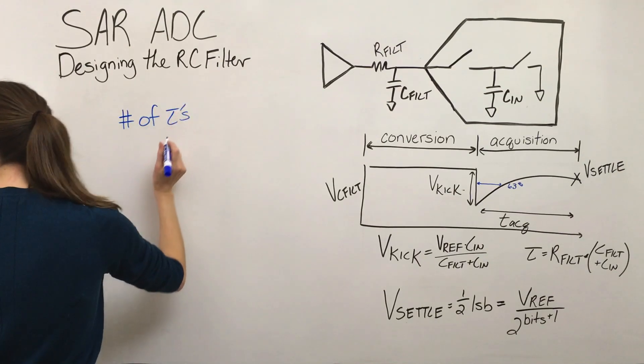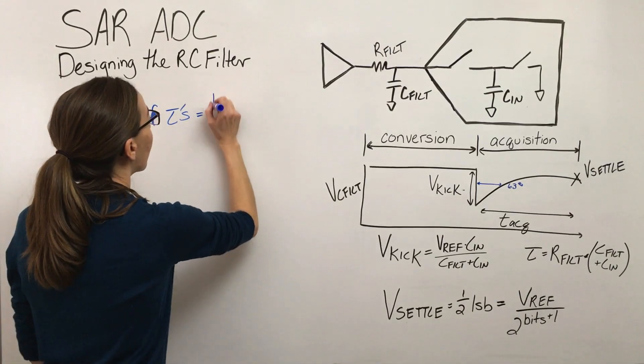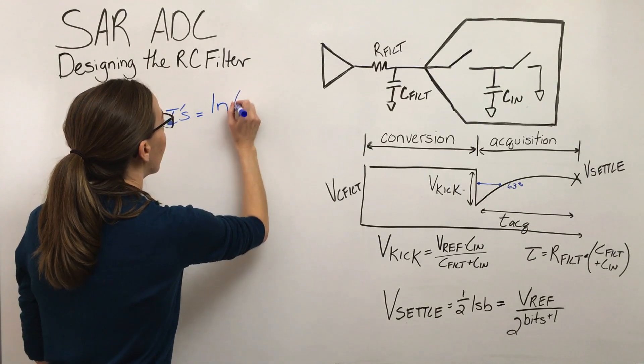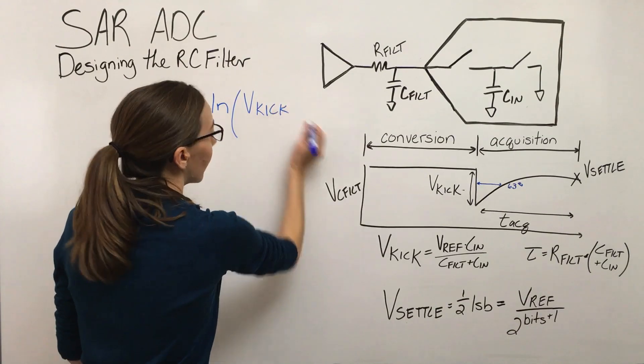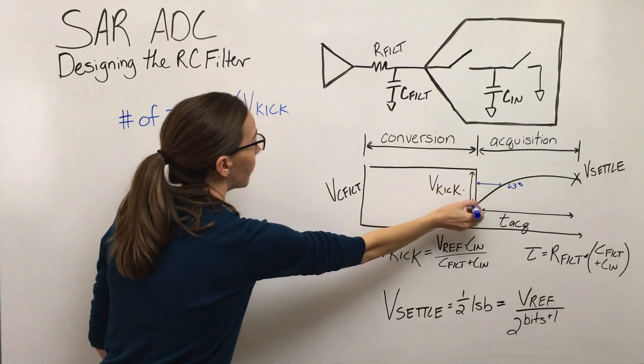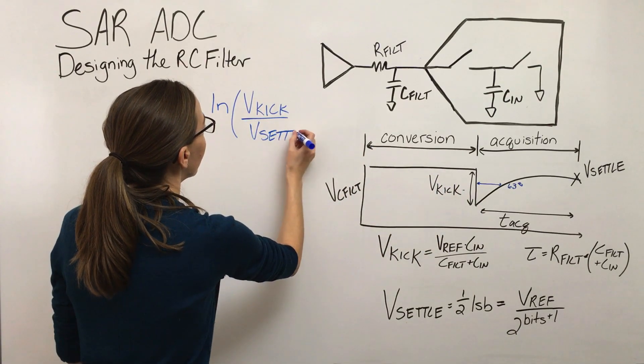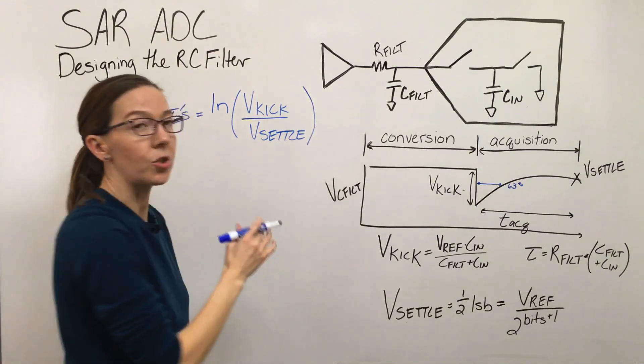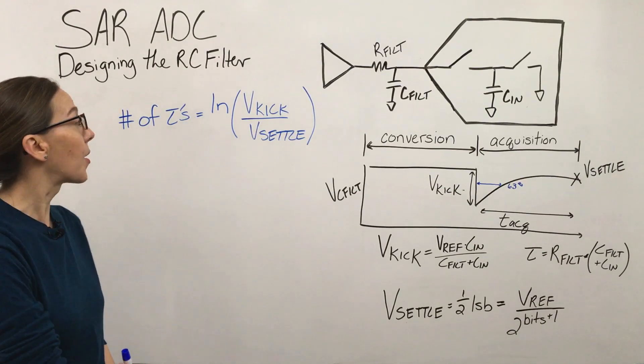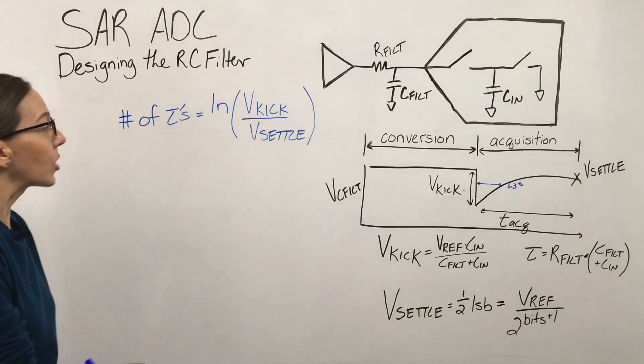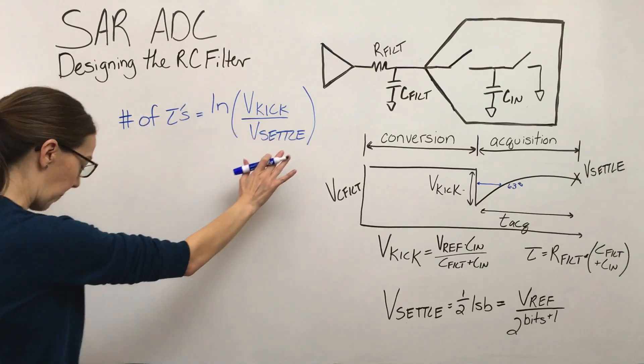But what we know about this RC decay is the number of time constants we need to fully settle this is going to be the natural log of this full voltage here over what it is we want to settle it to. And like I said, I'm not going to go into how this is derived, I would just recommend looking up RC filter equations or understanding time constants. So that's an equation that is going to help us.